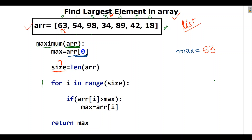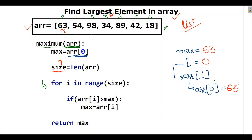First, when i is equal to 0, ARRI (that is, ARR[0]) is 63. We check: is 63 greater than 63? Since max also holds 63, the answer is no, so it won't go inside the if condition.